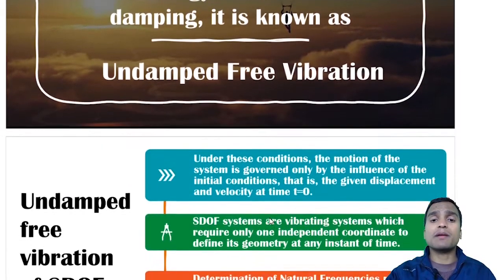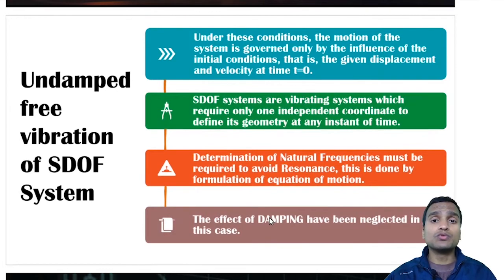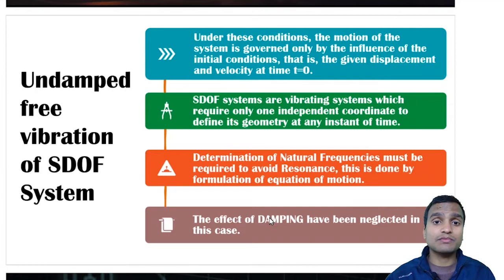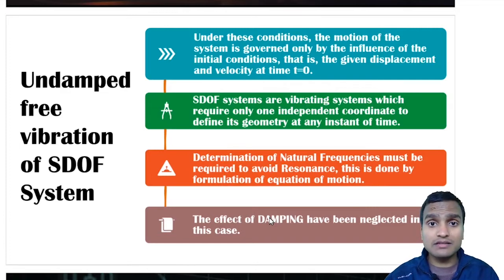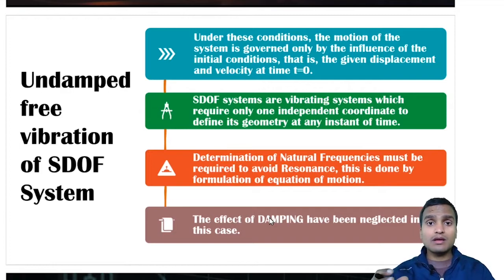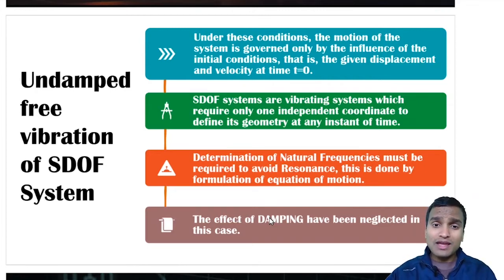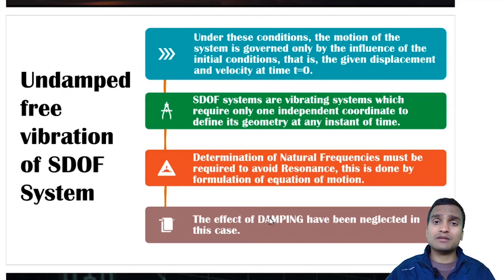We are going to do undamped free vibration analysis of systems with only a single degree of freedom — one independent coordinate only. Under these conditions, the motion of the system is governed only by the influence of initial conditions. Some initial excitation is given to a block or system, either in the form of some displacement from the mean position, or by imparting some velocity at time t equal to zero. That becomes the source of vibration in this case of free vibration.